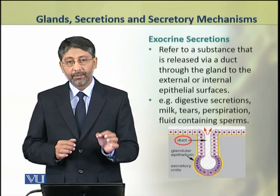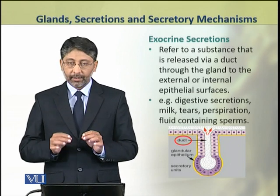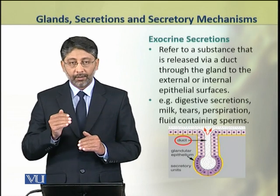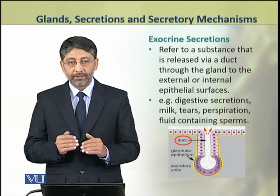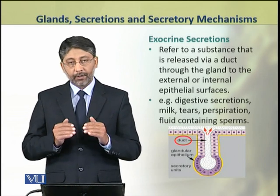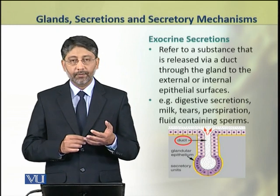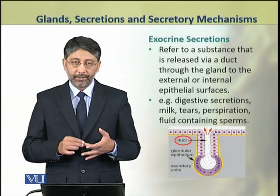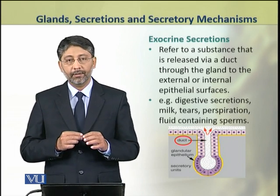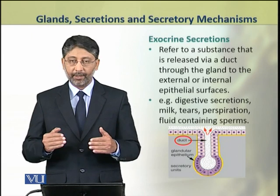Exocrine glands are ducted glands and their secretions are released onto external epithelial surfaces. Examples of exocrine secretions include digestive secretions, milk, tears, perspiration, and fluids containing sperms.